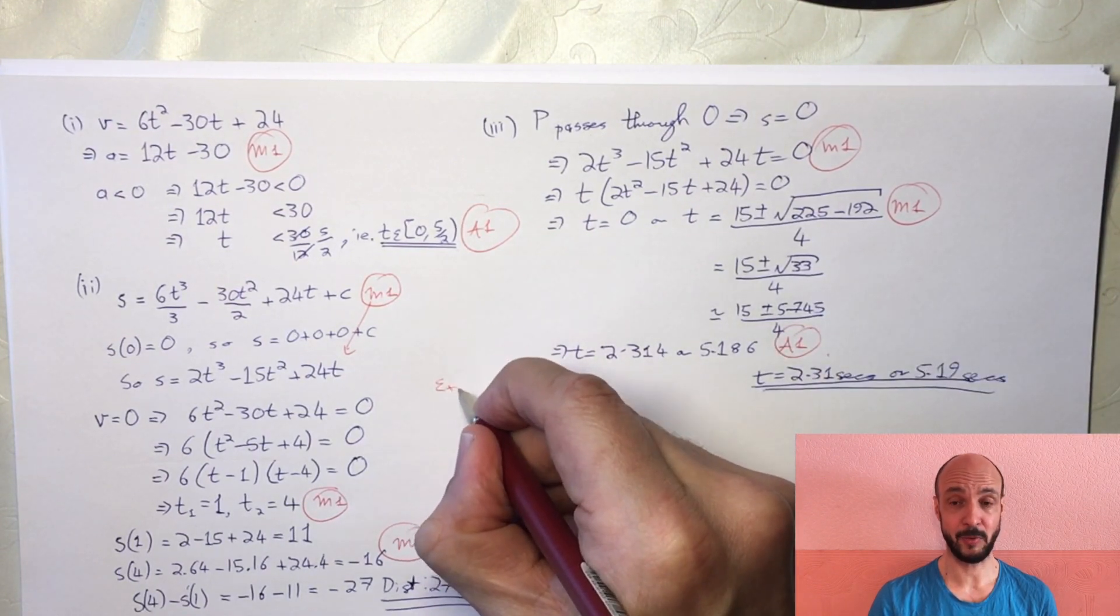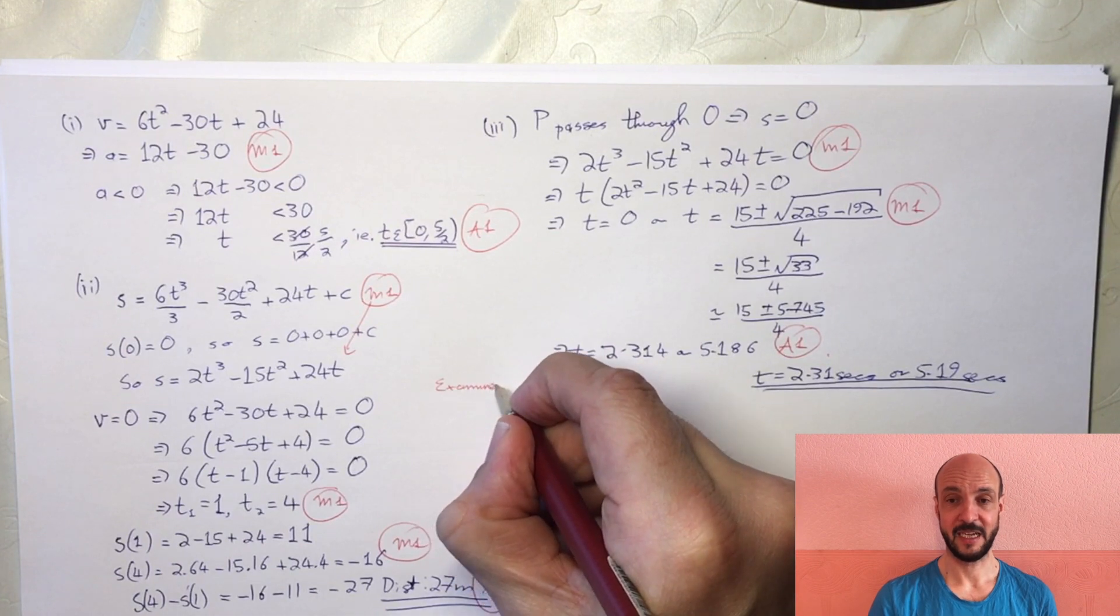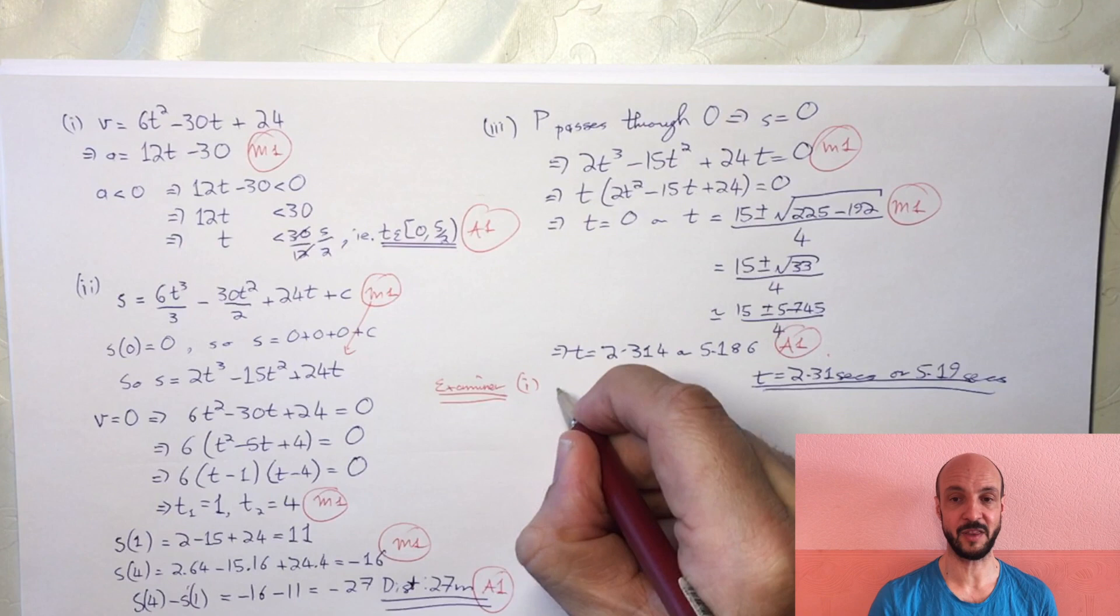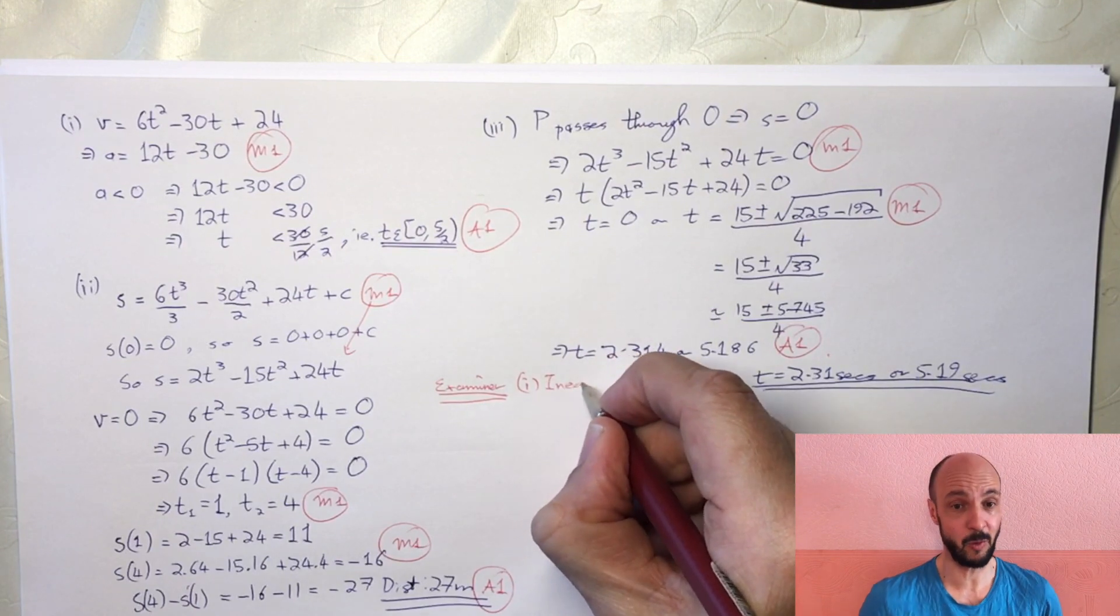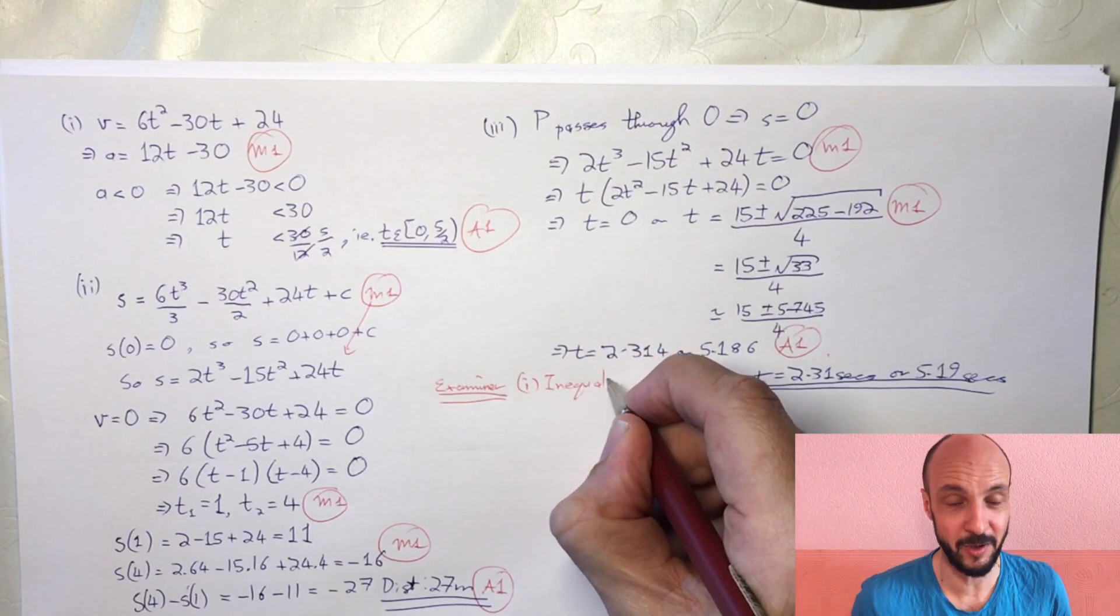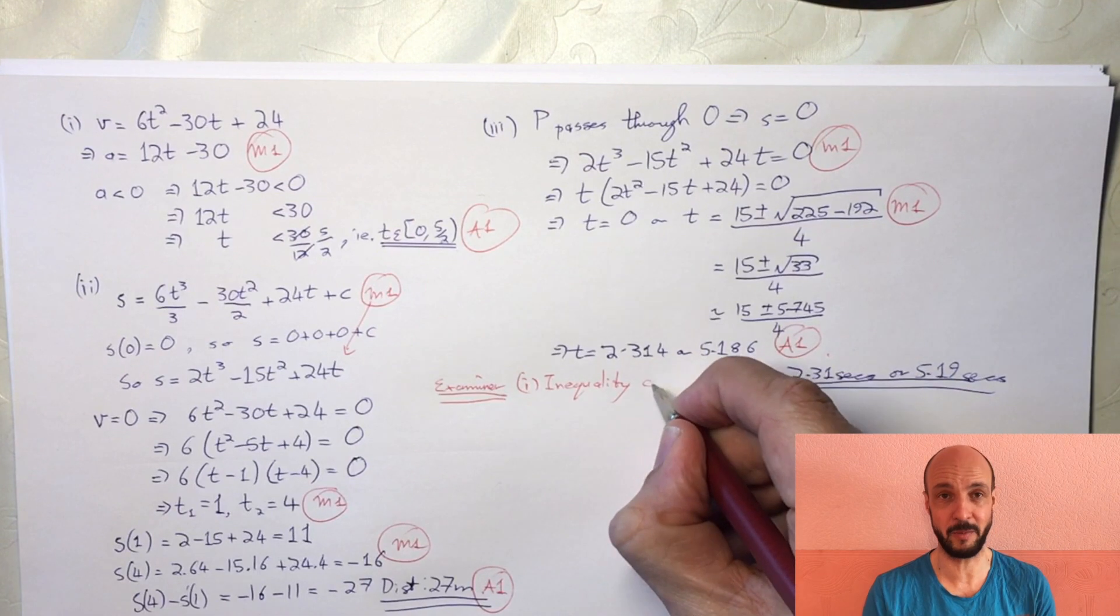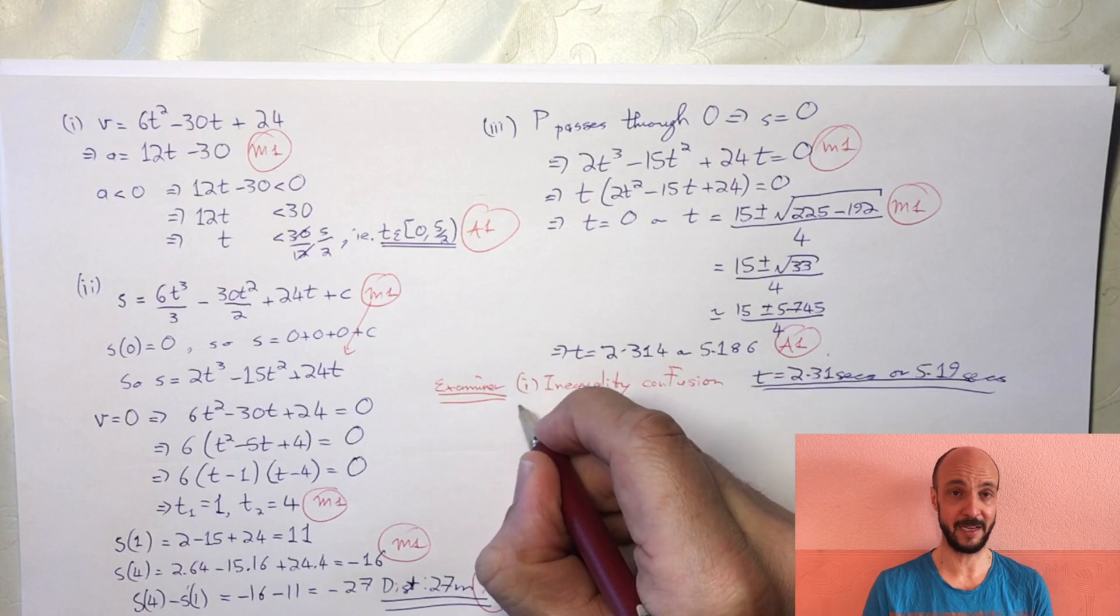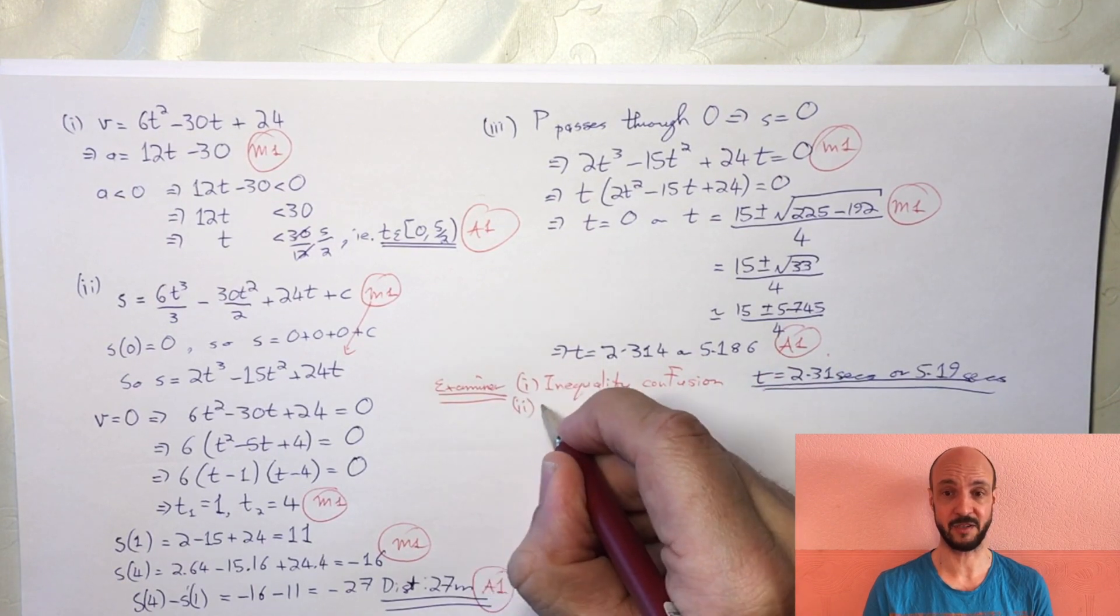In the examiner's report, some students got 2.5 in part 1 but wrote the inequality wrong. Be careful with inequalities - never divide by a negative, and it's best to add and subtract rather than multiply and divide. It makes life easier.